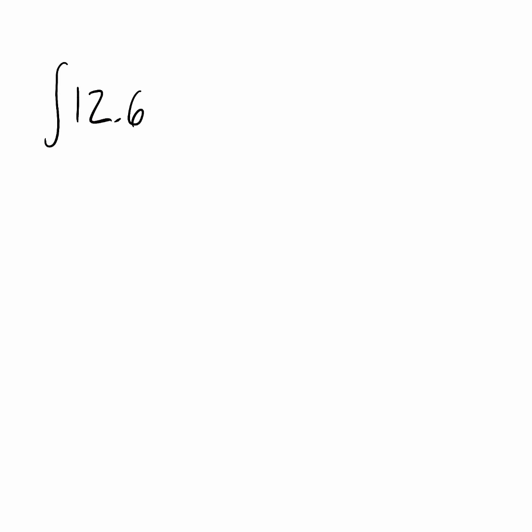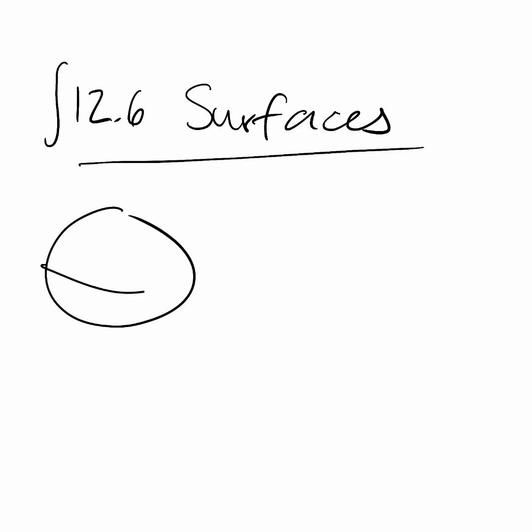Okay so here we go. So 12.6 is about surfaces. We're talking about surfaces here. And you remember already that we encountered spheres. So a sphere looks like a circle as far as its algebraic description. It's just there's one more letter.